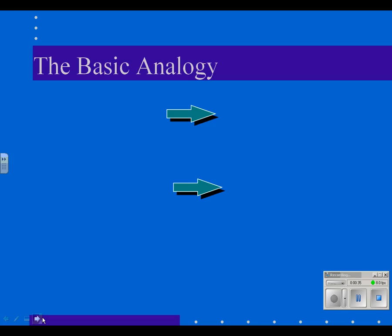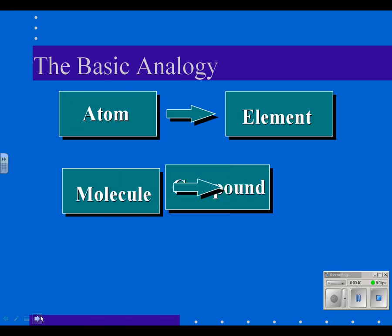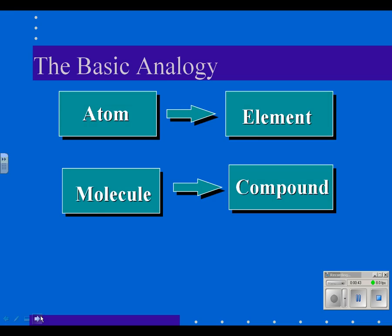Alright, to review chemistry and atomic structure, the basic analogy is this: an element is made up of all the same kind of atom. So atoms make up elements. A molecule is the basic unit of a compound. This is an important concept. A molecule like H2O, two hydrogen atoms attached to an oxygen atom, makes the compound water, whereas a whole bunch of hydrogen atoms together make the element hydrogen.